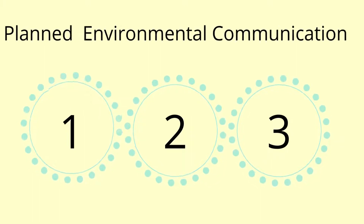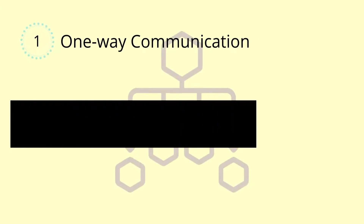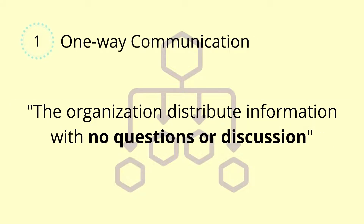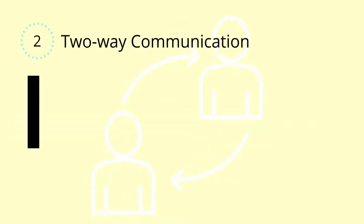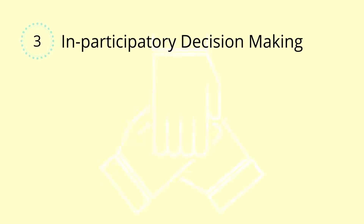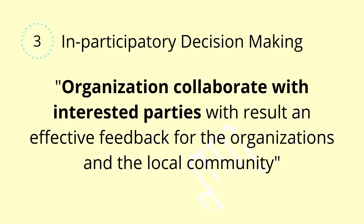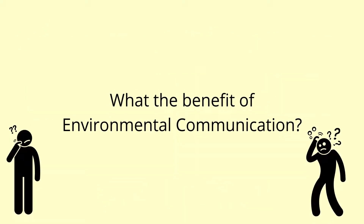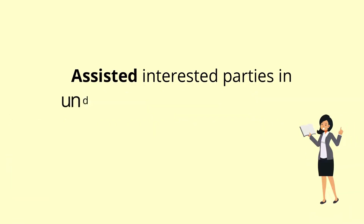Planned environmental communication is classified into three types. One-way communication happens when the organization distributes information with no questions or discussion, such as an environmental report. Two-way communication happens with an exchange of information and ideas between the organization and interested parties. In participatory decision making, the organization collaborates with interested parties, resulting in effective feedback for the organization and the local community.